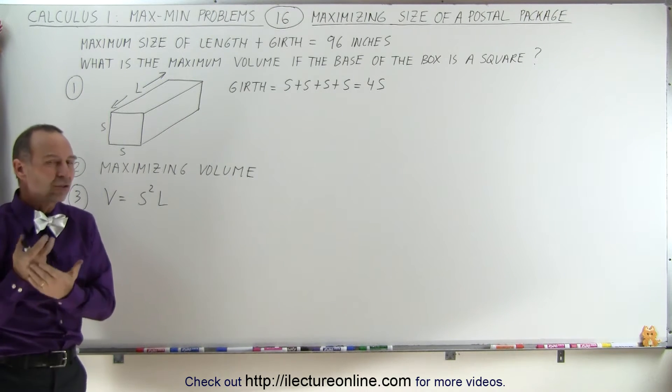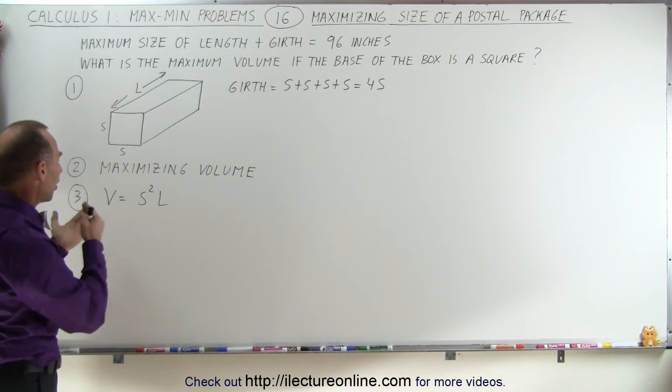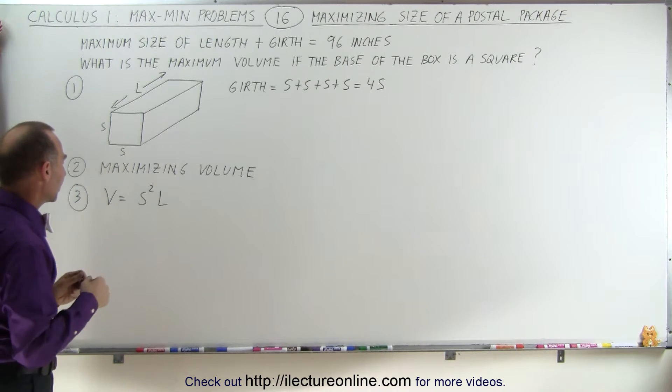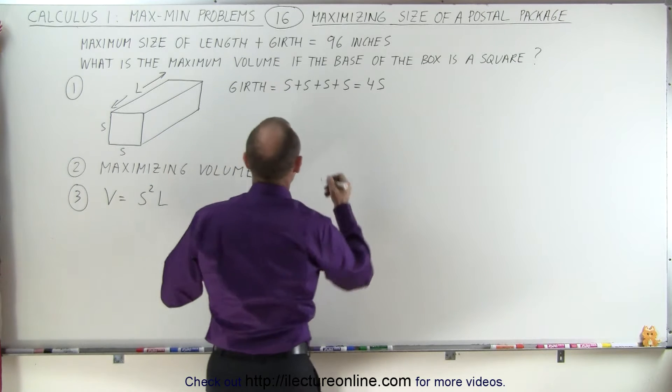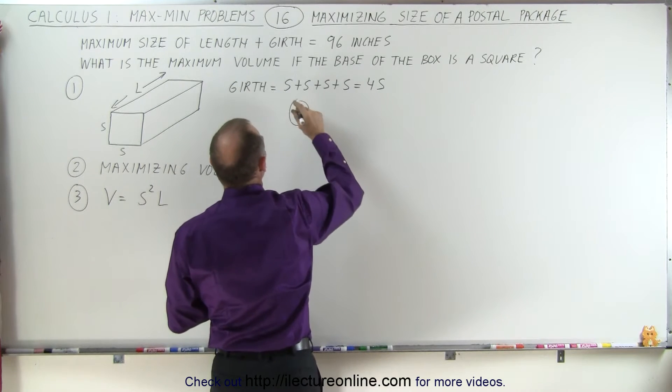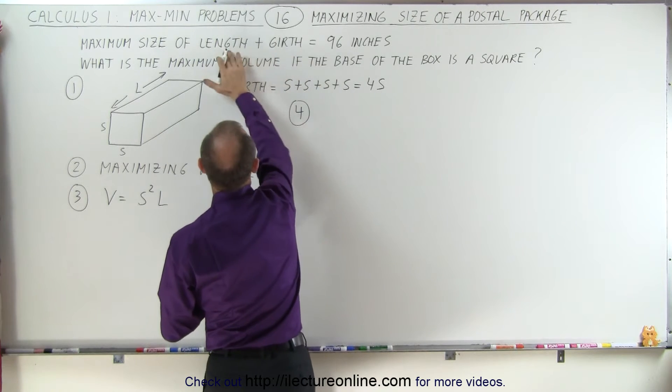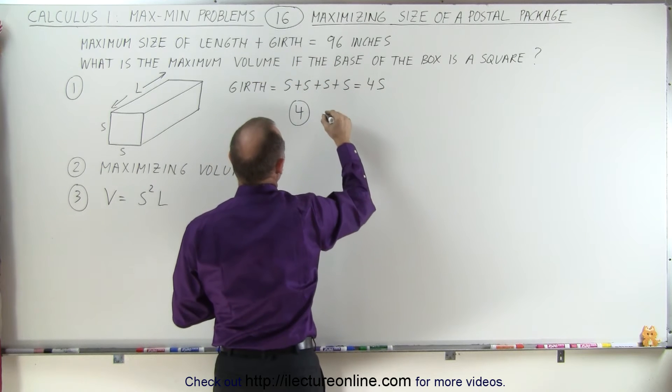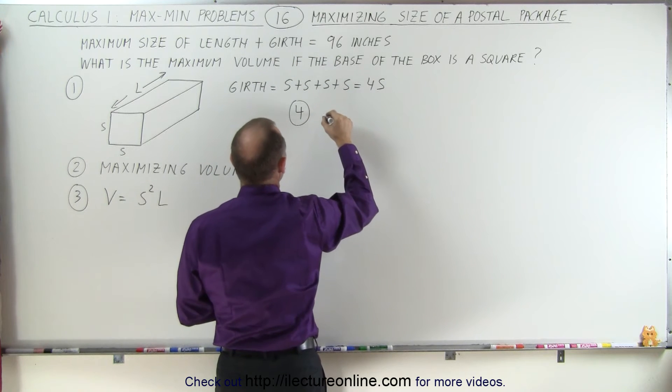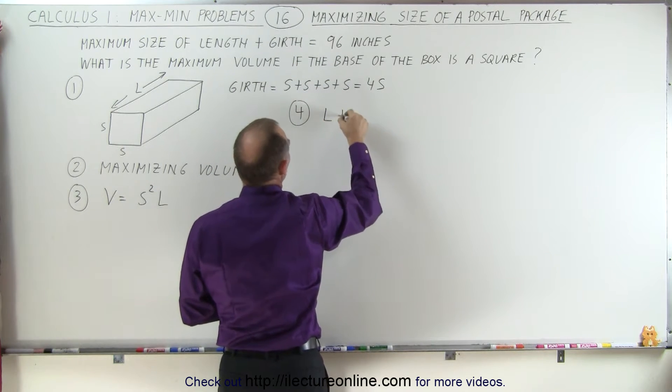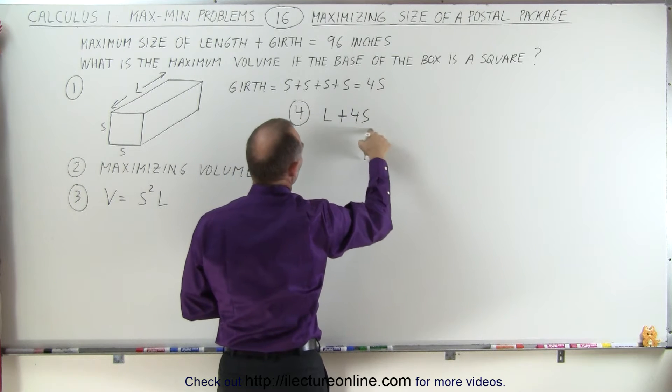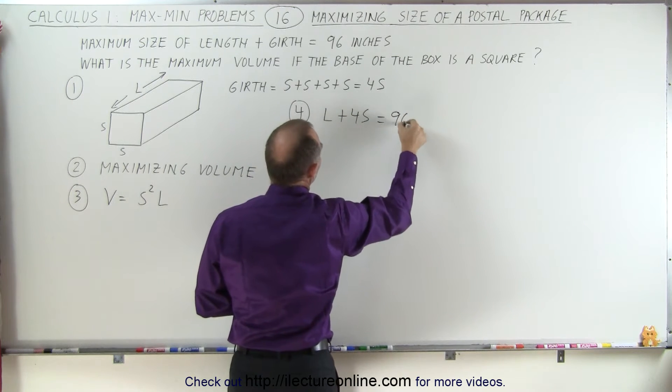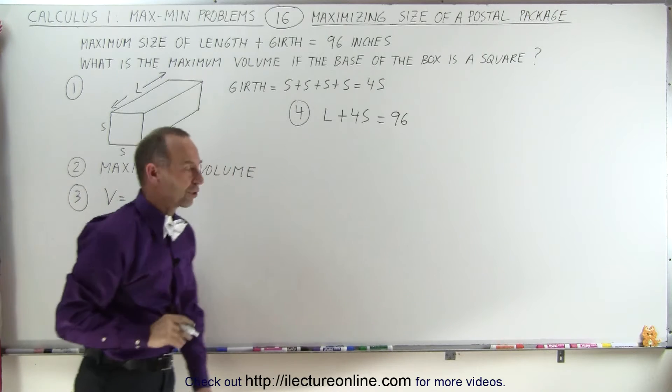We need a constraint to solve for one variable in terms of the other. The constraint is that the length plus the girth must equal 96 inches or not exceed 96 inches. So L + 4s = 96. There's your constraint.